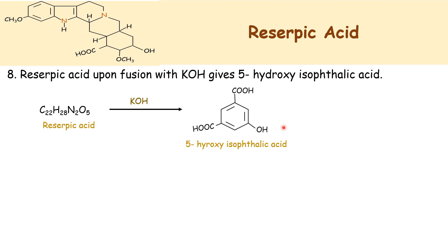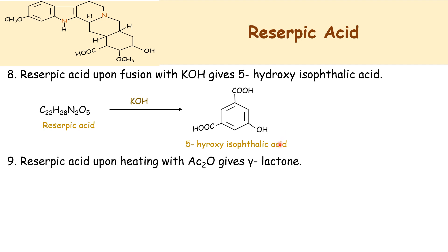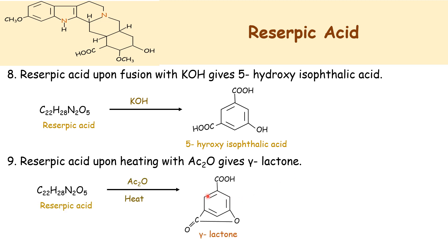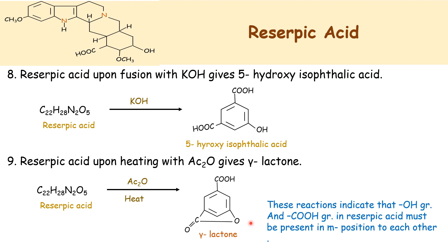Then reserpic acid upon fusion with KOH gives 5-hydroxyisothalic acid. The reserpic acid upon heating with acetic anhydride gives a gamma lactone. Formation of that product indicates that the OH and COOH groups in reserpic acid must be present at the meta position, that is 1 to 3 position, to each other.